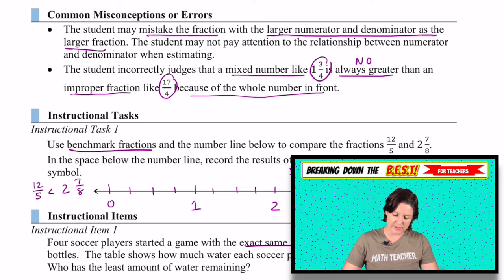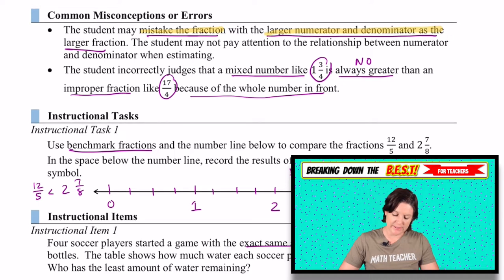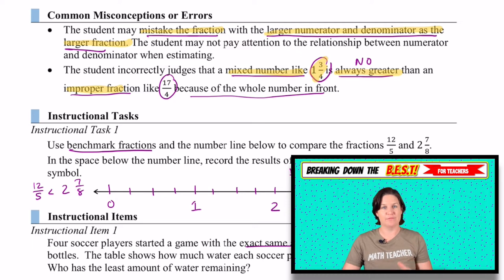Some common misconceptions. It says that students may mistake the fraction with a larger numerator and denominator as the larger fraction, or students incorrectly judge that a mixed number like one and three fourths is always greater than an improper fraction, which is interesting to see improper fraction because they've since common core been shaking it up and just saying fraction greater than one. But improper fraction is what we used to refer to those as where the numerator is greater than the denominator. Because students see that whole number in front, they think it's automatically greater. But in this case, that's not the case, right? Because 17 fourths would be greater than four holes, where one and three fourths only is greater than one hole.